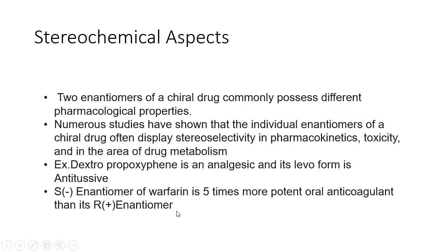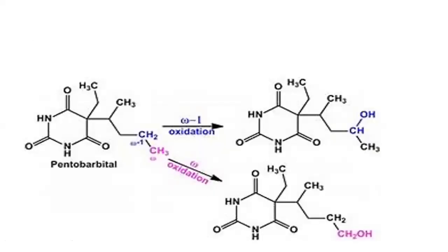Different enantiomers show variation in metabolic pathways. For pentobarbital, it can undergo omega-1 oxidation or omega-oxidation. In omega-1 oxidation, hydroxylation takes place at the second carbon, whereas in omega-oxidation, hydroxylation takes place at the methyl group on the first carbon, producing different metabolites.